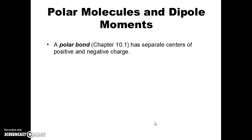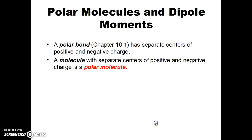A polar bond, as you see in Zumdahl chapter 10.1, has separate centers of positive and negative charge in the bond, but a molecule with separate centers of positive and negative charge is a polar molecule. We'll distinguish between the two using some diagrams in a moment.